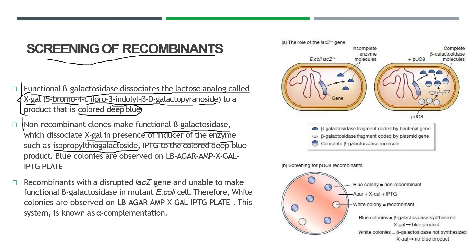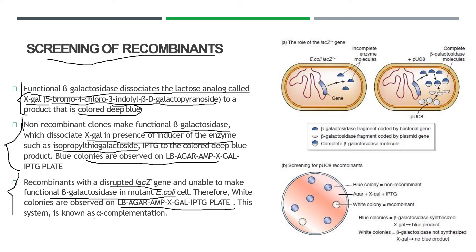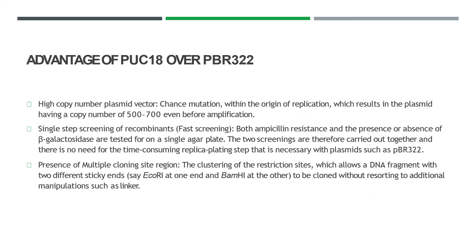Non-recombinant clones make functional beta-galactosidase which dissociates X-gal in the presence of IPTG to a deep blue product, so blue colonies are observed. Recombinants with disrupted lacZ are unable to make functional beta-galactosidase in mutant E. coli, therefore white colonies are observed on the same LB agar ampicillin X-gal/IPTG plate. This is called alpha-complementation or blue-white screening. White colonies are the recombinants and blue colonies are the non-recombinants.